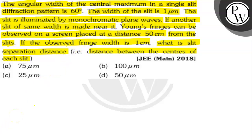If a light of wavelength lambda is used in a Young's double slit experiment, the angular separation is given by lambda by d. If β is the fringe width and D is the distance of the screen from the slits, then β is equal to lambda D by d. We will put the given values in this relation to get the slit separation distance.